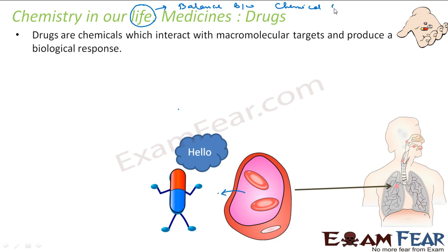Human life is nothing but a balance between chemical compounds. These chemical compounds make lungs, eyes, and all the organs. If that balance is impacted, we fall ill. So the purpose of a drug is to maintain this balance. These drugs interact with macromolecular targets, which are themselves chemical compounds — proteins, lipids, or nucleic acids. Proteins are nothing but enzymes.